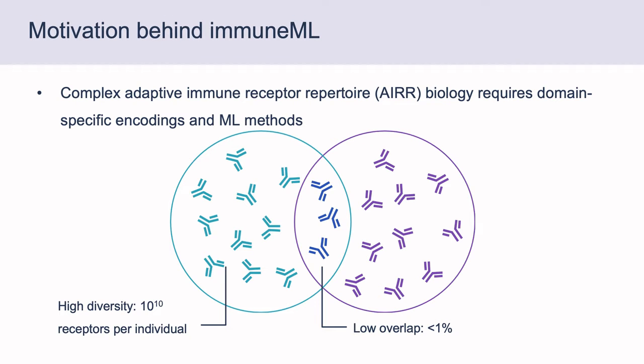Immune repertoires, or AIR, are collections of immune receptors in the body. Such immune receptors recognize antigens like viruses, bacteria, or cancer, making AIR data highly useful for disease diagnosis and drug design. But the biology that underlies AIR data is very complex and unique, due to the high diversity and low overlap of repertoires. Therefore we need specific AIR encodings and machine learning methods, and cannot rely solely on generic frameworks like scikit-learn or PyTorch.